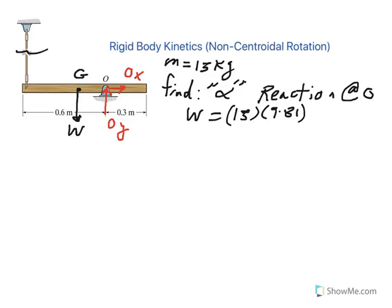Specifically when you have a non-centroidal rotation, you want to take moment about the pivot point. So sum of the moment, sum of the torque about O, is equal to I sub O times alpha, where I sub O is the mass moment of inertia with respect to the axis passing through O.